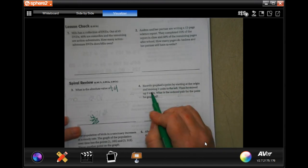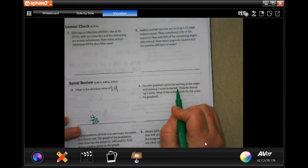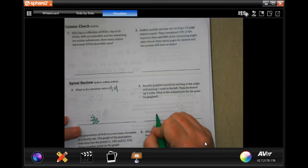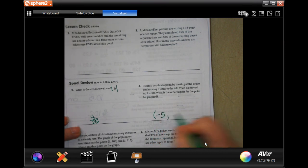Ricardo graphed a point by starting in the origin and moving 5 units to the left, and then 2 units up. Ordered there for the point he graphed. 5 units to the left, well, going left means negative. 5 units to the left, 2 units up. Up means positive. There you go.